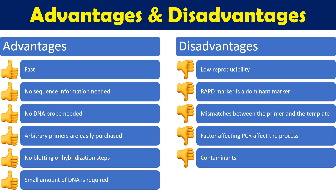There are certain advantages and disadvantages of this test. First advantage: because it is a PCR-based test, it is very fast — you can get results quickly compared to other marker tests. We use arbitrary nucleotide primer sequences, so no sequence information of the target DNA is needed at all. Compared to RFLP, we don't require any kind of DNA probe here. Arbitrary primers can be easily purchased as they are already available in the market. Compared to RFLP, we are not going to use any kind of blotting or hybridization steps because this is a PCR-based test. A small amount of DNA sample is sufficient to perform this test — we don't require a large amount of DNA sample.